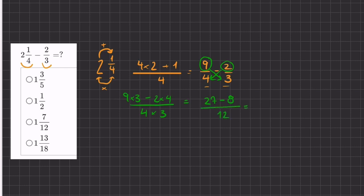And now it's just simple subtraction. We have 27 minus 8, which will give us 19 over 12. And this is our answer, but it's not in its simplest form. It's not in a mixed number form. So we do have to turn that into a mixed number.